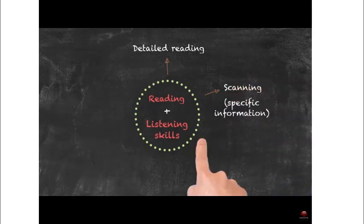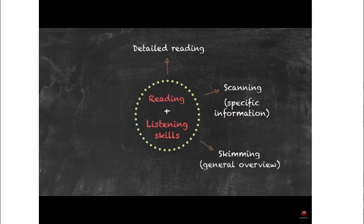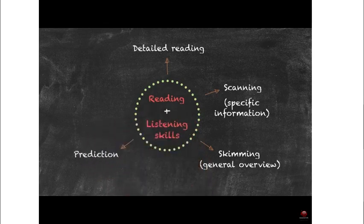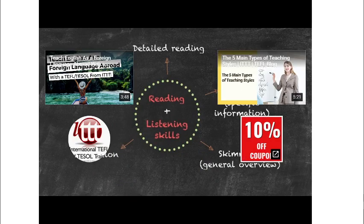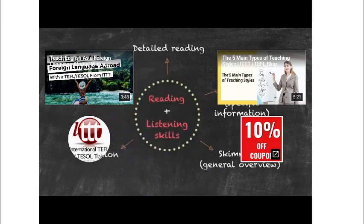Another type of quick reading is called skimming, where we try to get a general overview of what the text is actually saying. Other reading sub-skills include reading for prediction — having read a certain amount of text, we say what we think is going to happen next — and reading for deduction, where from the information given we make some form of inference, for example about who actually wrote the text.